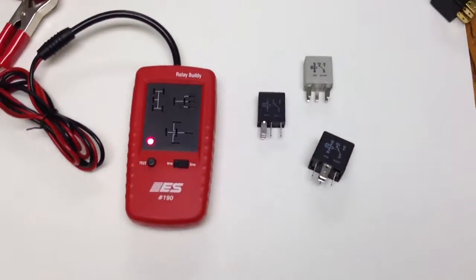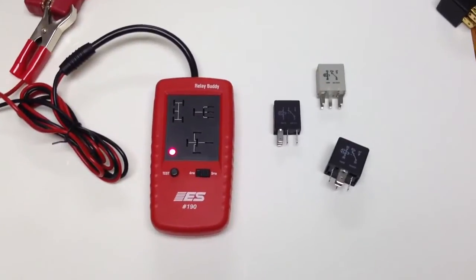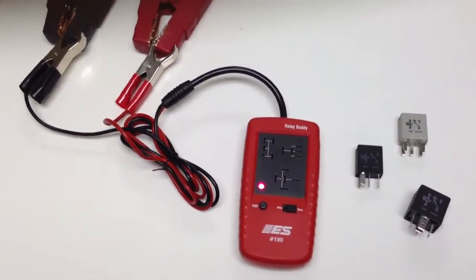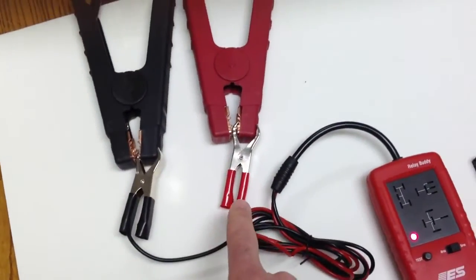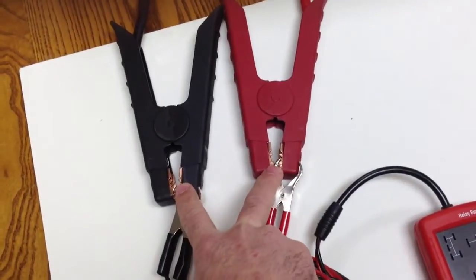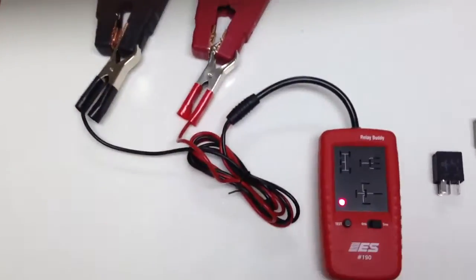That's going to be about 90% of the relays that you're going to see under the hood at the fuse panel. Relay Buddy connects directly to your car battery. Here I've got this connected up to a jump starter just for demonstration purposes.